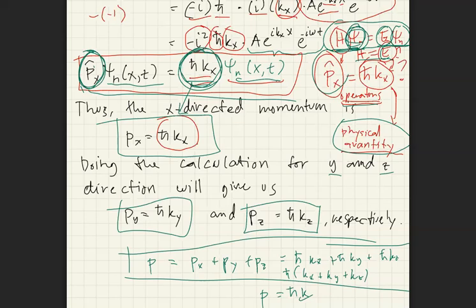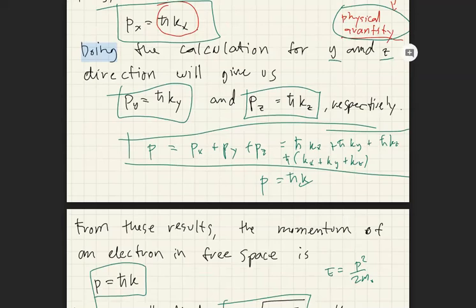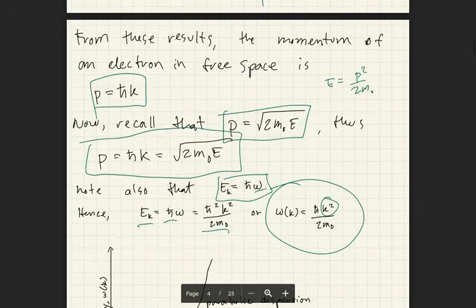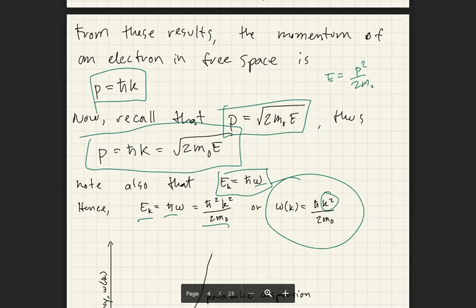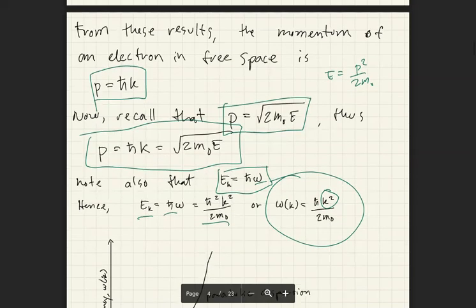Doing the same calculation for y and z gives p_y equals h-bar k_y and p_z equals h-bar k_z. Adding them together gives the total momentum h-bar k. From these results, the momentum of an electron in free space is h-bar k. The energy can also be expressed as p squared over 2m, and equating p equals square root of 2m naught E, we can set it equal to h-bar k.